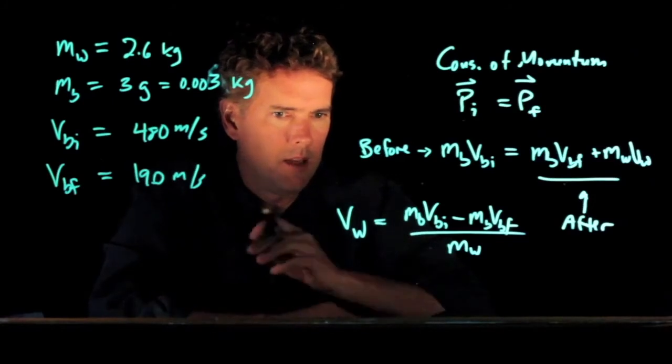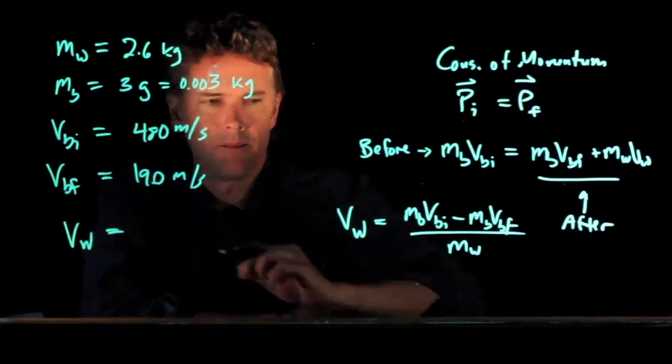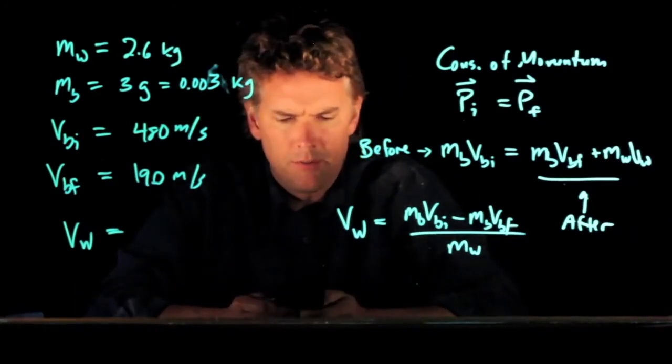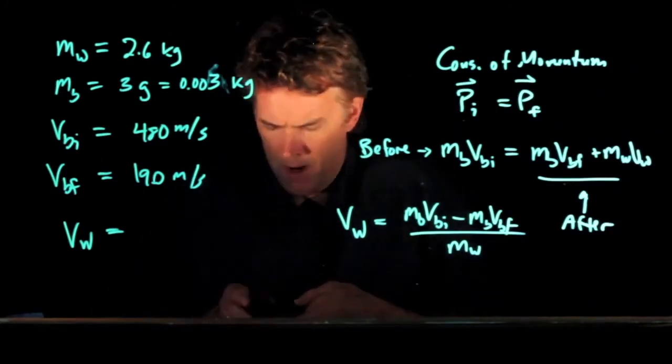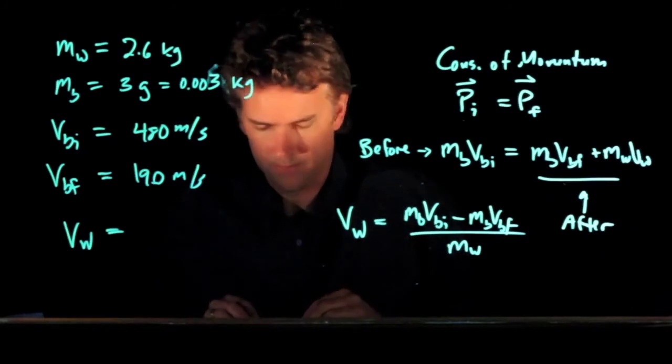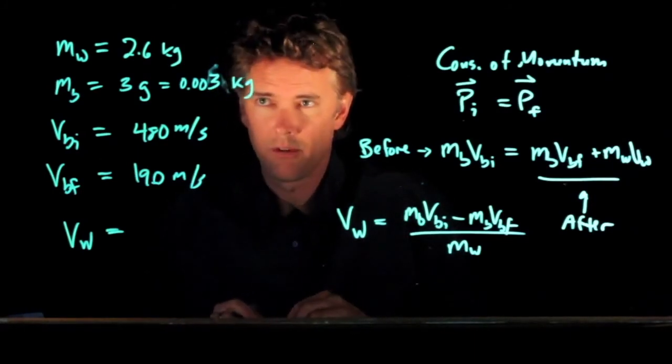So we can plug that in for Vw. And let's see what we calculate. So we've got the mass of the bullet times the difference in the speeds. So that's 480 minus 190 times 0.003.